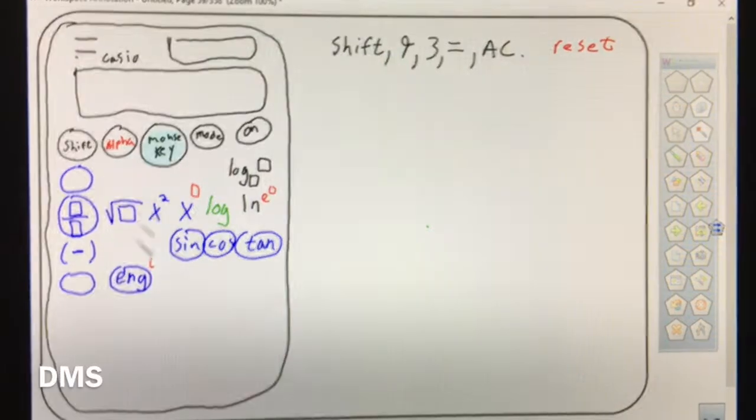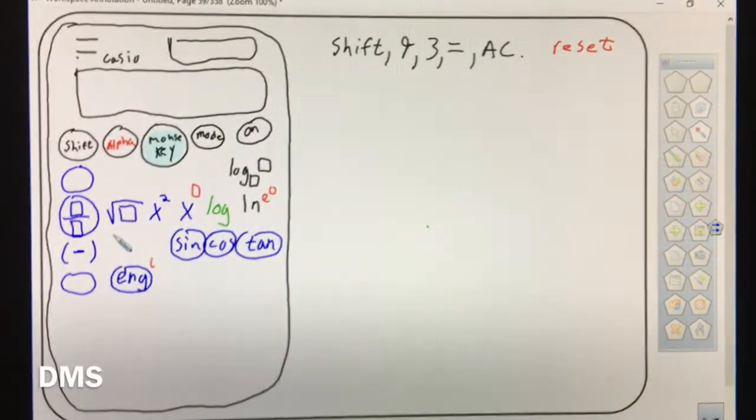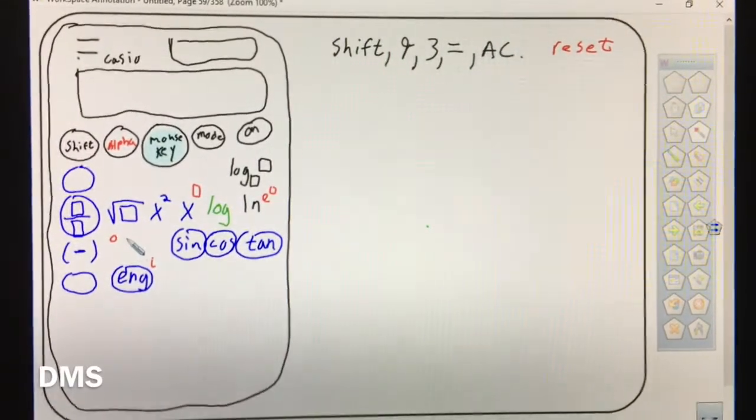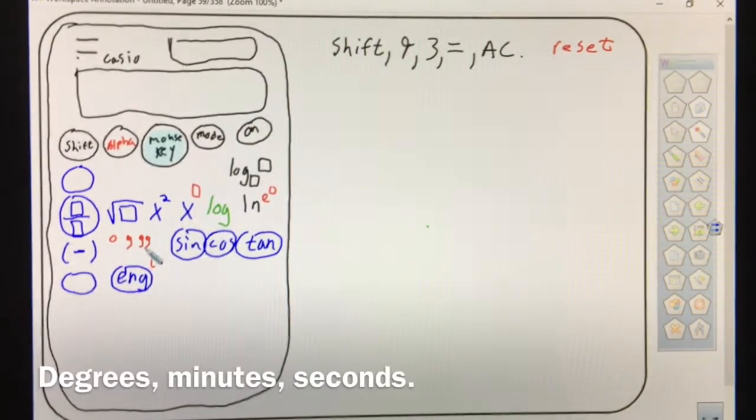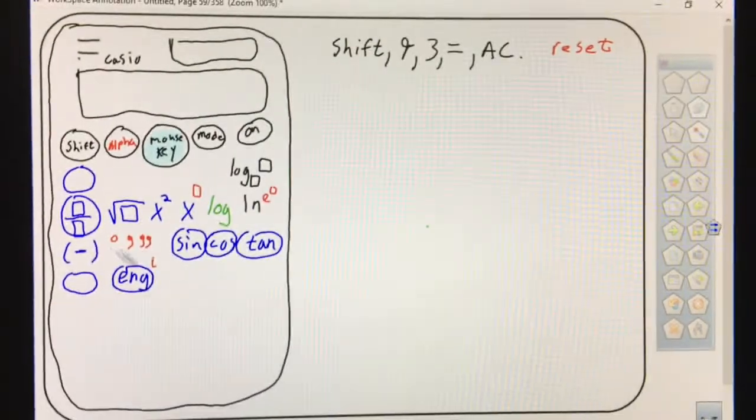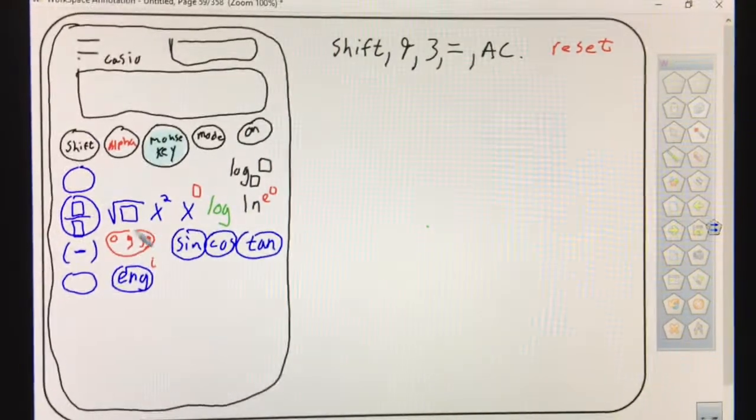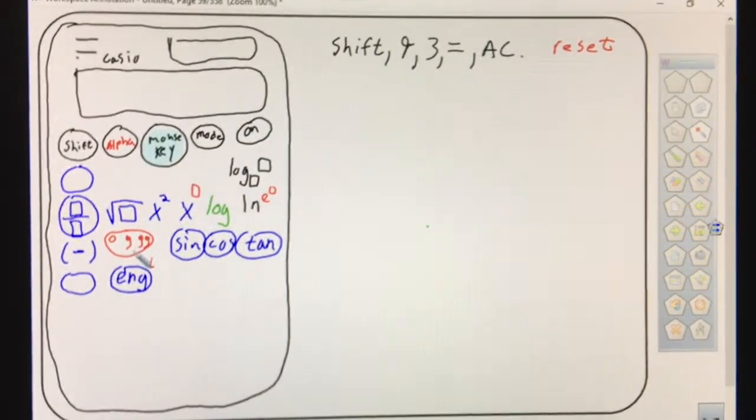Above the English button, between English and square root, I call it the DMS button. It has degree, minutes, and seconds. You'll have to use that button once on the test. If you don't watch the video when I post it and learn how to use that button, you'll get that question wrong, and it's just a simple calculator key.